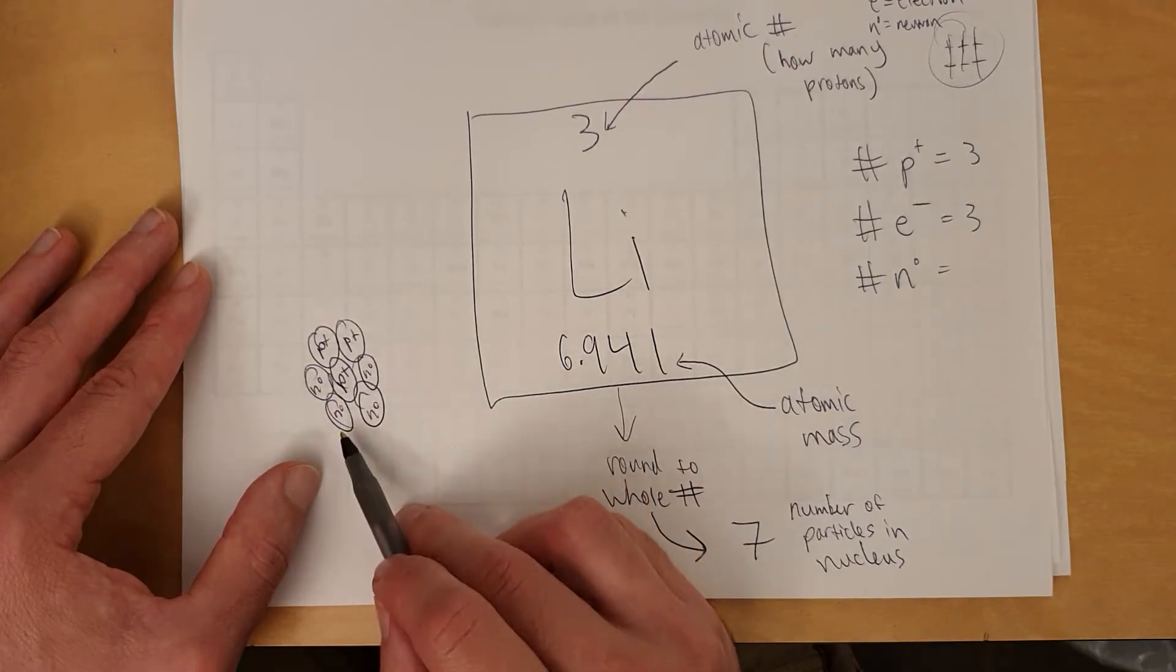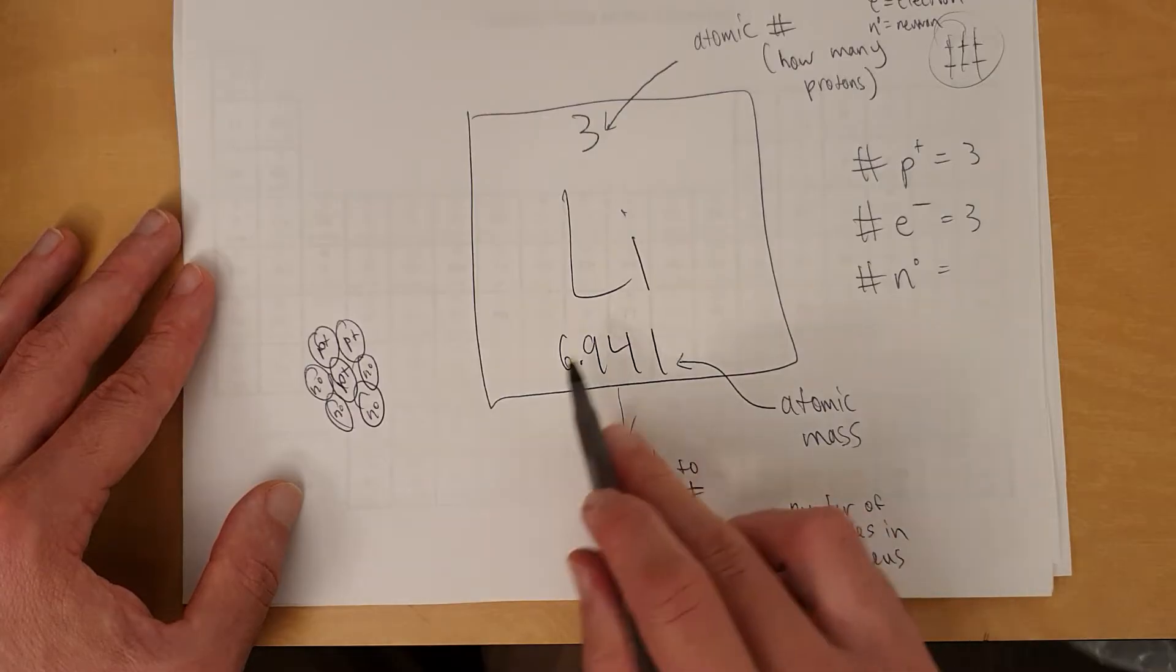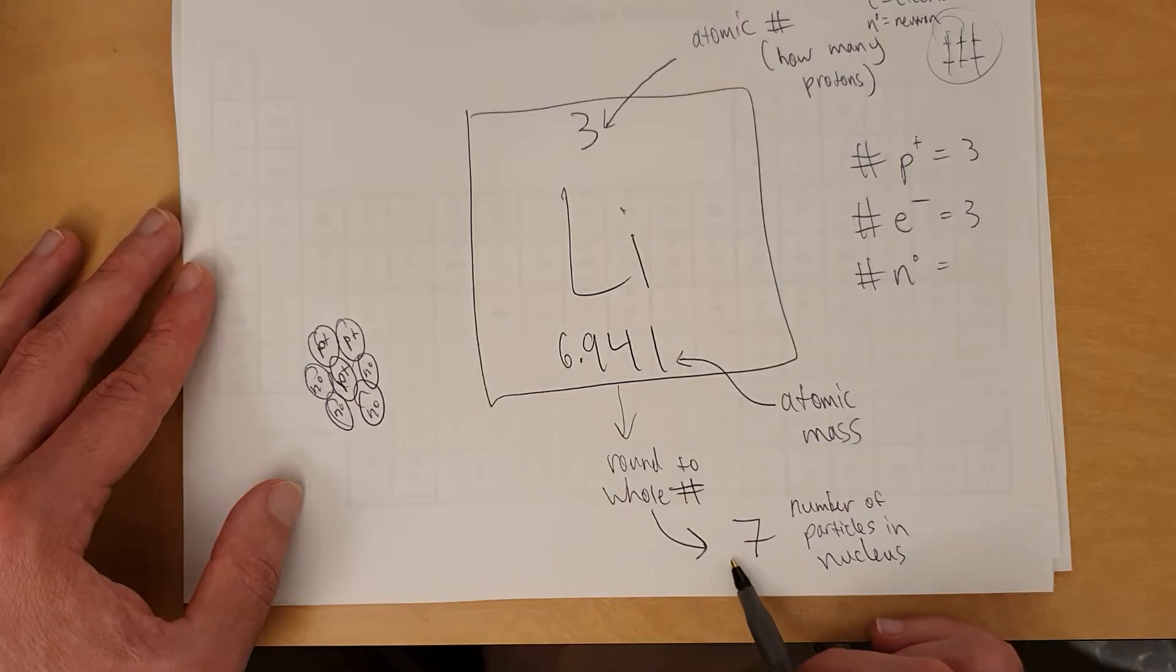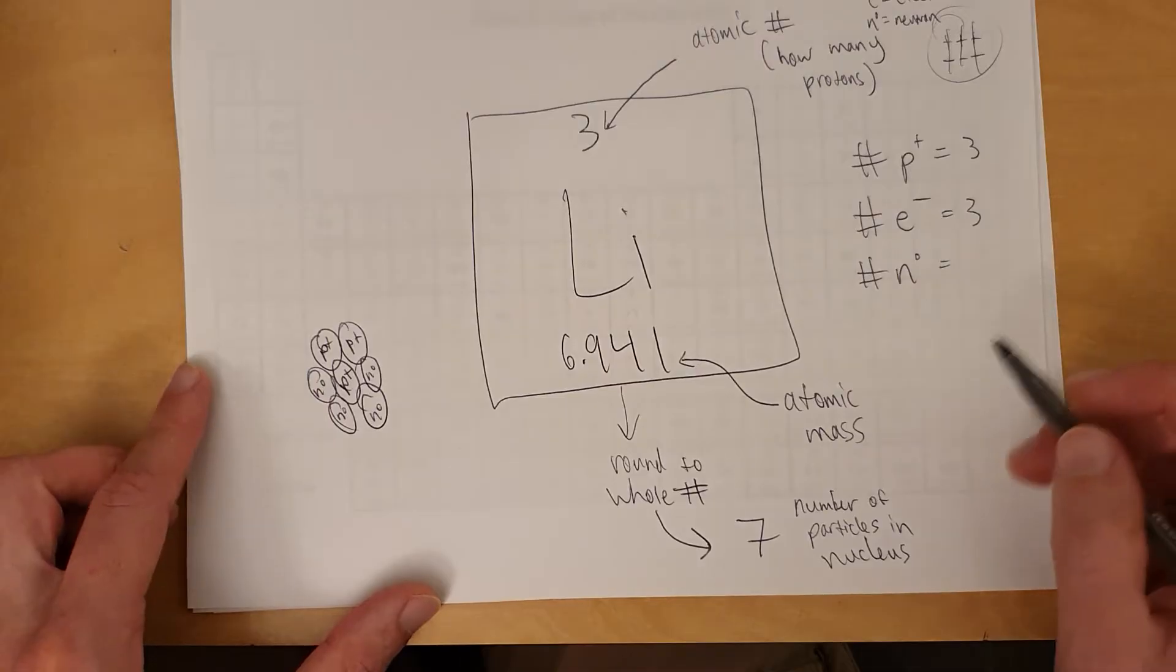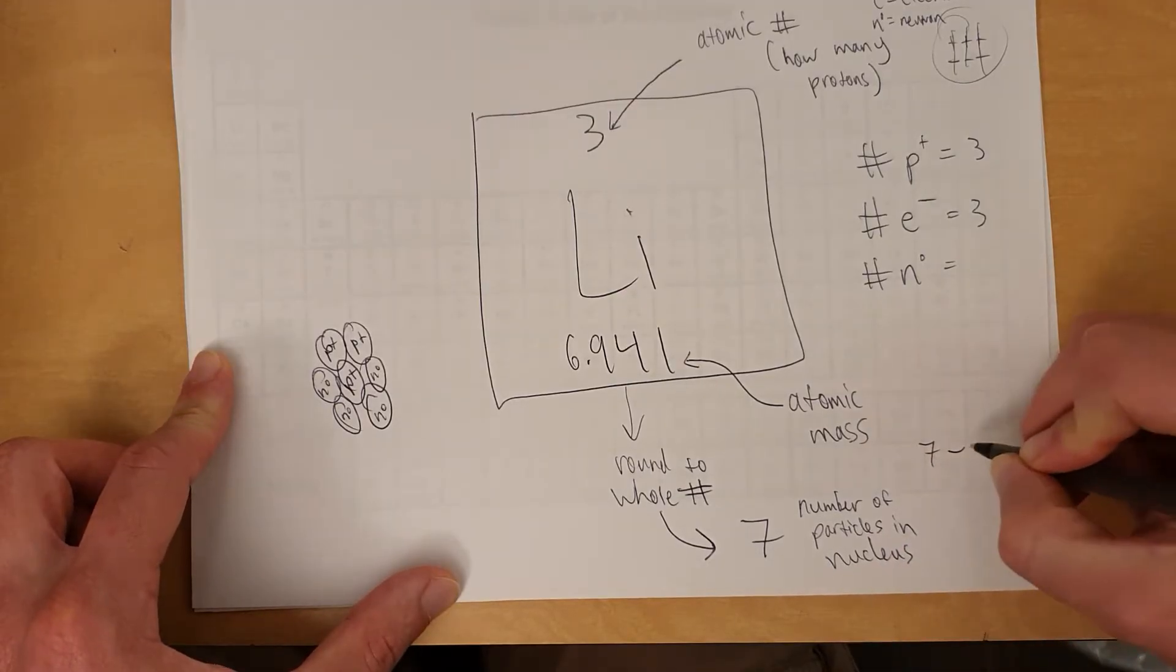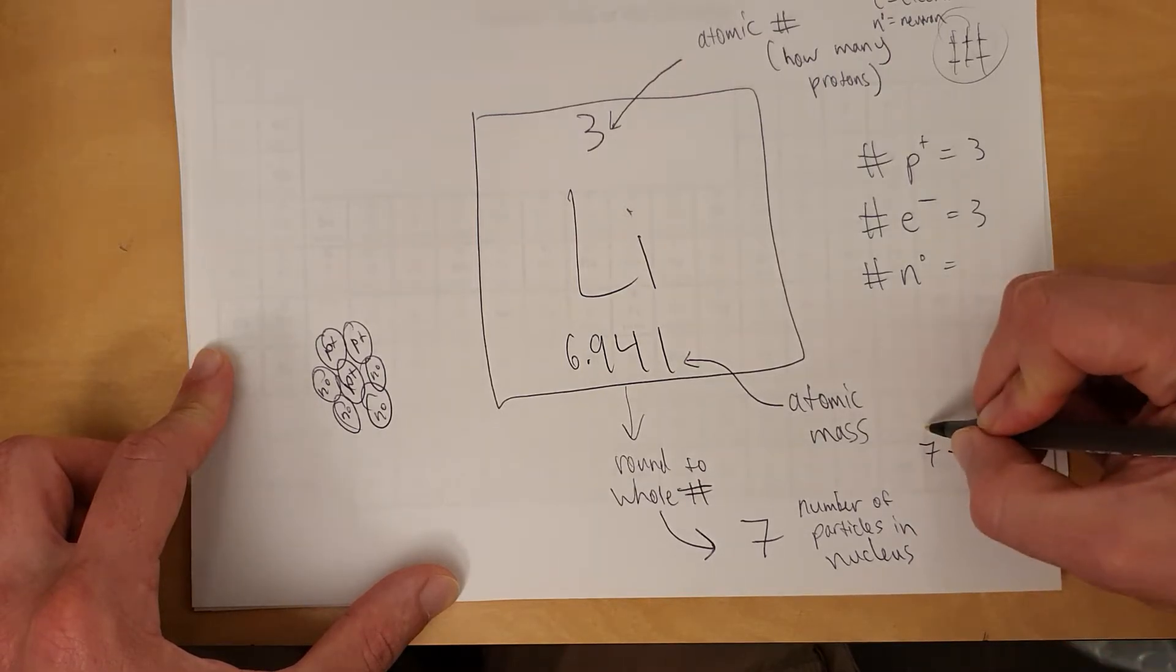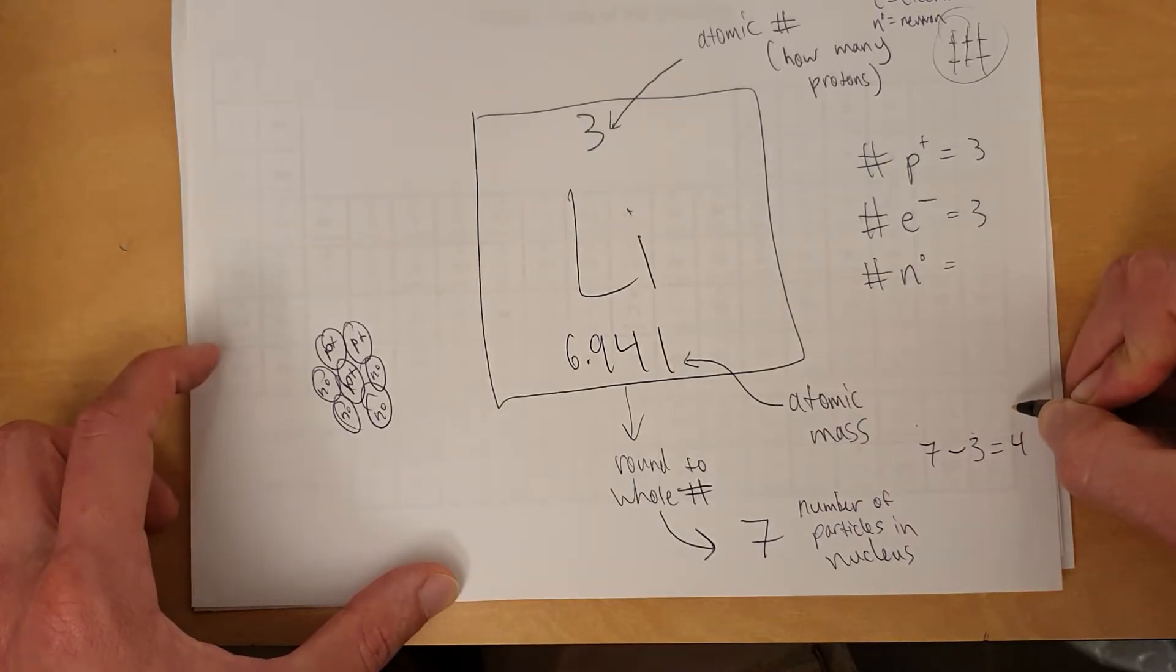So number of protons plus number of neutrons equals this, the number here, if it's rounded to the nearest whole number. So the atomic mass. So here's the thing. You take this number, rounded to the nearest whole number, so that's seven, minus the number of protons. And that gives number of neutrons. So the mass number minus number of protons equals number of neutrons. That's how you're going to go about figuring it out.